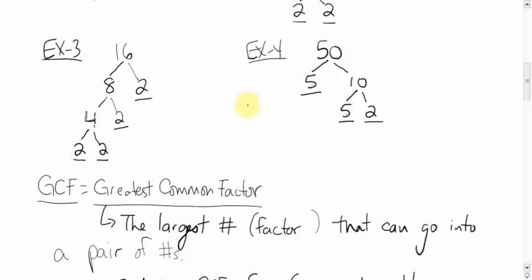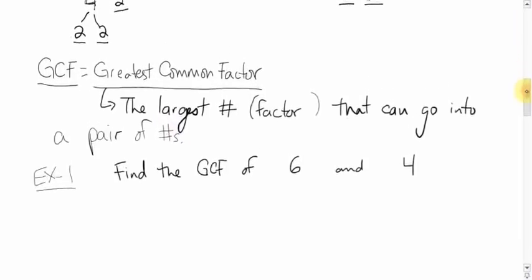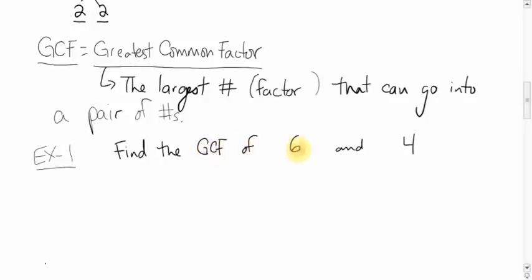Now we can use this information to help us find the greatest common factor. When you're given a pair of numbers, you're asked: what is the largest factor that can go into both numbers? There are two ways to do this. One is just common sense. The other is using the factor tree method.